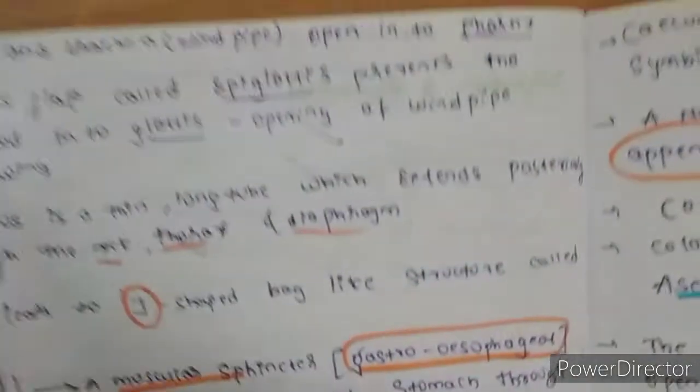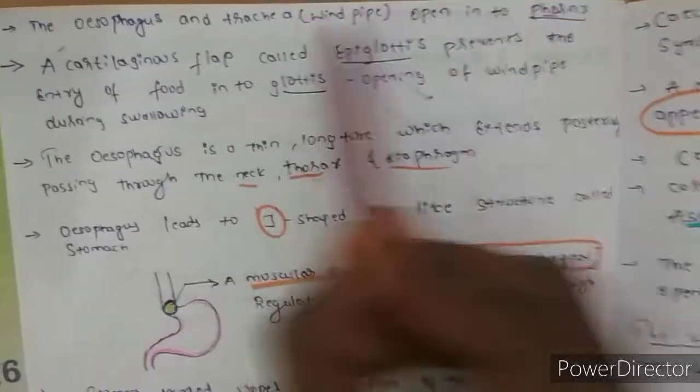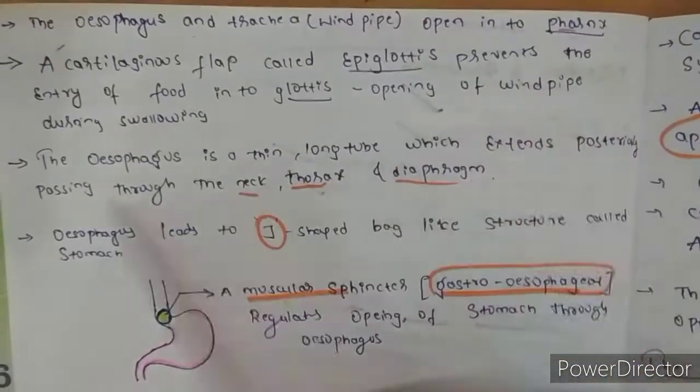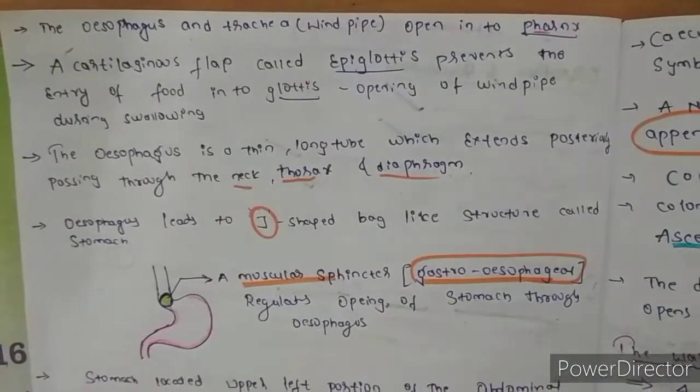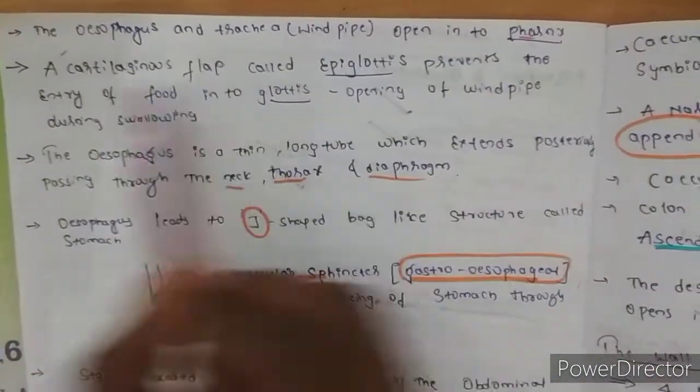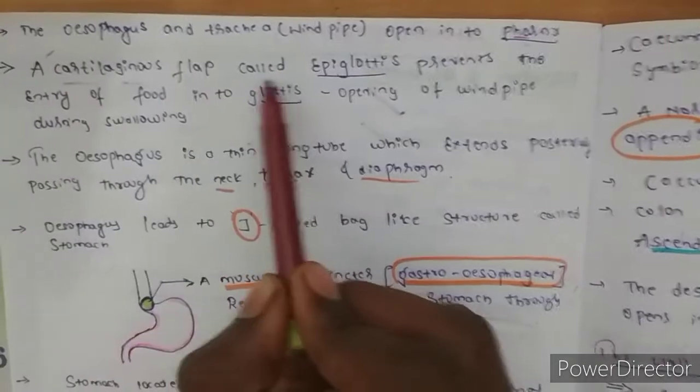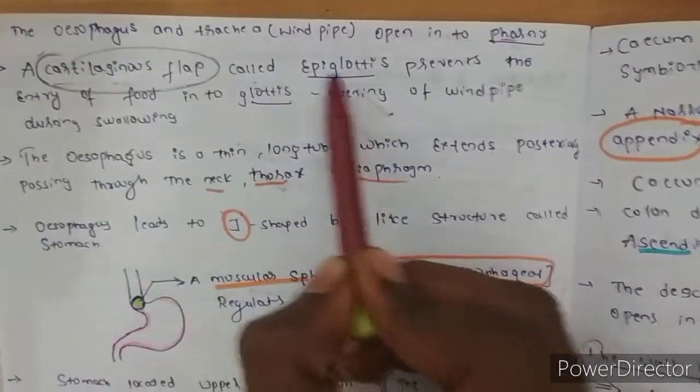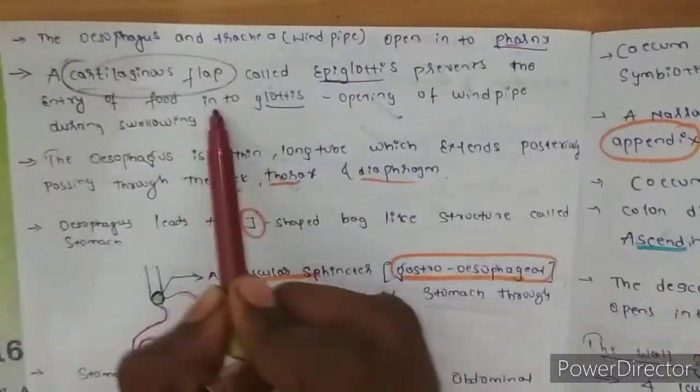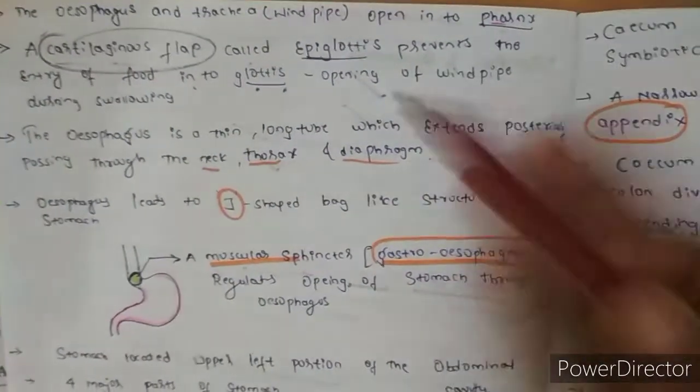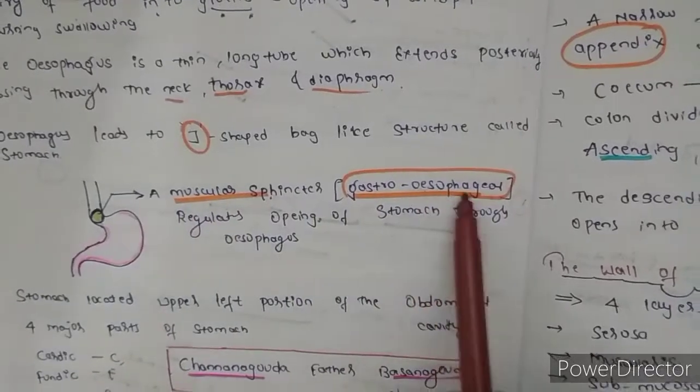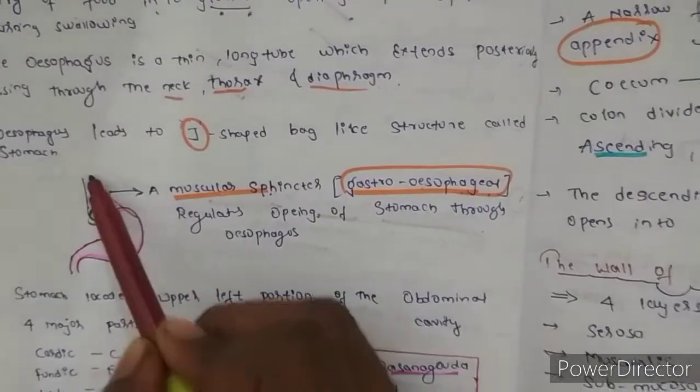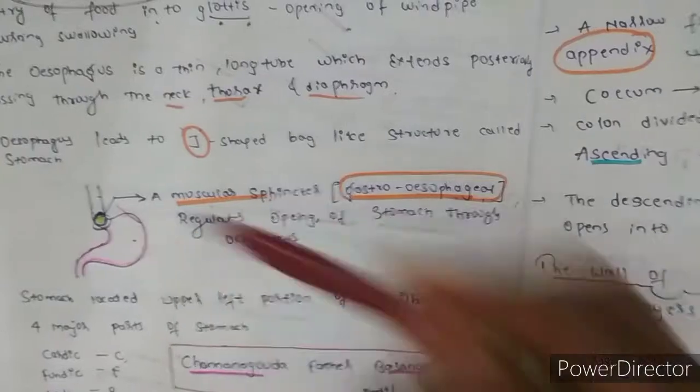So next, as food passes through esophagus, you know that the pharynx, which is common for both esophagus and trachea respiration. And cartilage flap, very important for NEET - cartilage flap called epiglottis. This word is also important. Epiglottis prevents the entry of food into the glottis. These notes will be available. You can see here also a muscular sphincter, gastroesophageal, which makes the entry of food from esophagus to stomach.